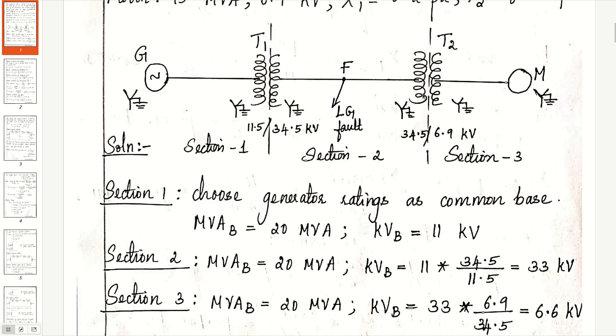In section 3, MVAB is 20. KVB is section 2 KV into the transformation ratio of T2. So we get 6.6 kV in section 3.